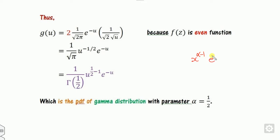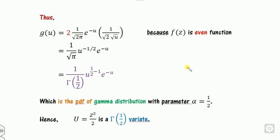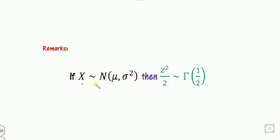After simplification, the result can be written in the form of a gamma function: it matches x to the power alpha minus 1 times e to the minus x divided by gamma of alpha, where x corresponds to u and alpha corresponds to one-half. Therefore u follows a gamma distribution with scale parameter alpha equal to one-half, confirming that z squared over 2 follows a gamma distribution.